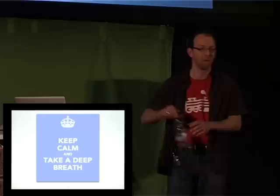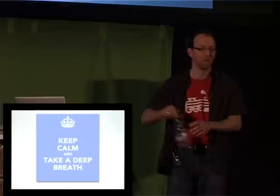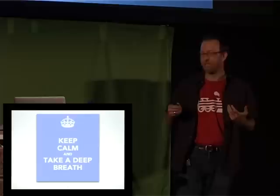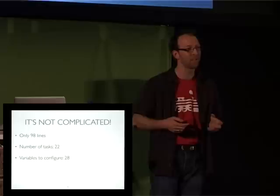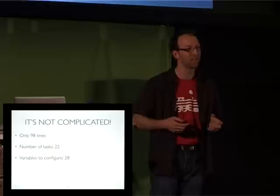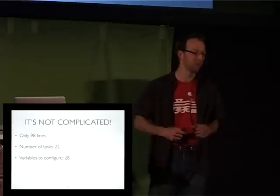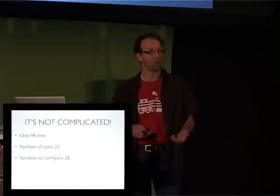This role is not as complicated as it seems. It has 98 lines of code, 22 tasks, and a couple of variables you can set. It's not complicated — anyone can do it. Which means if you want to deploy a project, it's quite easy to just add a configuration and be done with it, rather than having to rewrite or reinvent the wheel every time.